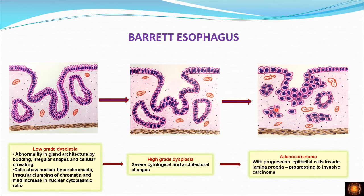Later, these dysplastic cells break through the basement membrane and invade into the mucosa. Once epithelial cells invade the lamina propria, we call it adenocarcinoma. In this way, from Barrett's esophagus, the patient develops low grade dysplasia, then high grade dysplasia, and finally adenocarcinoma.